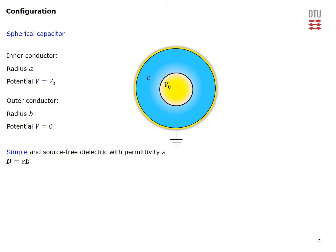Here is the configuration of our spherical capacitor. We have an inner conductor of radius A and an outer conductor of radius B. The inner conductor is kept at a constant potential V0, while the outer conductor is grounded and thus has a potential equal to zero. The medium between the two conductors is a simple, source-free dielectric material with permittivity epsilon, giving us a simple relationship between the D and E fields in the capacitor.